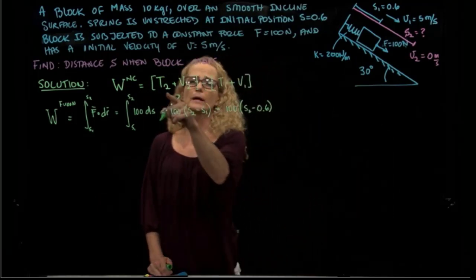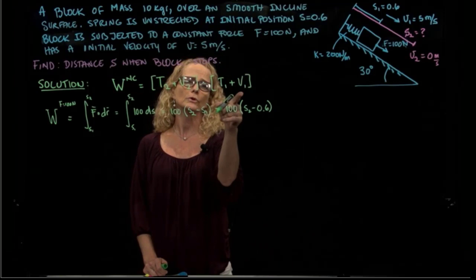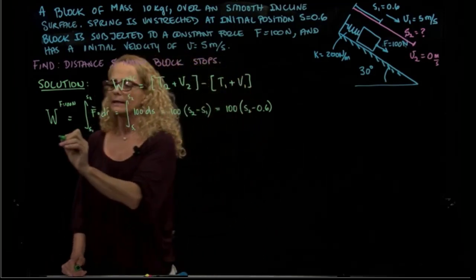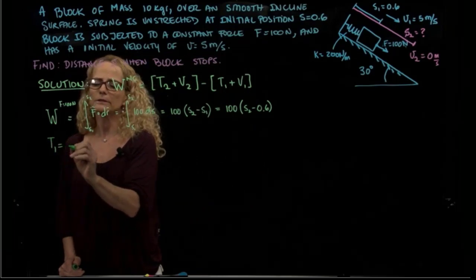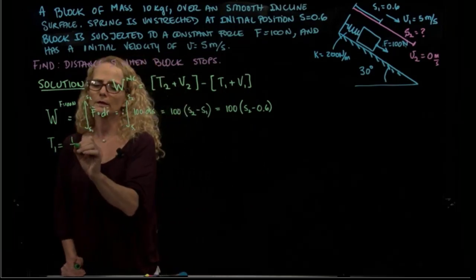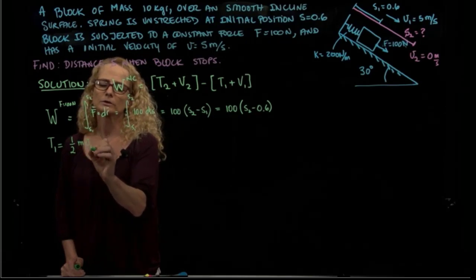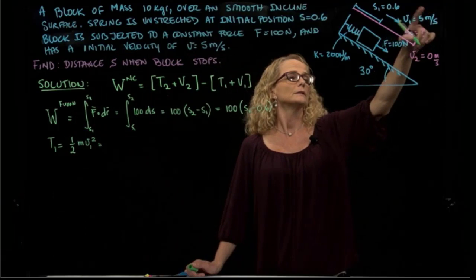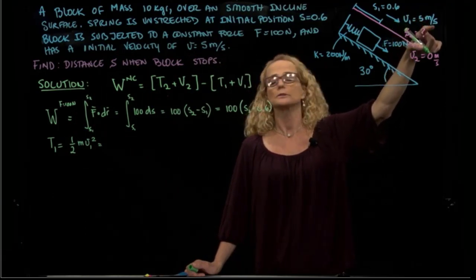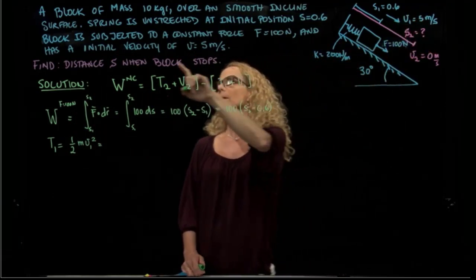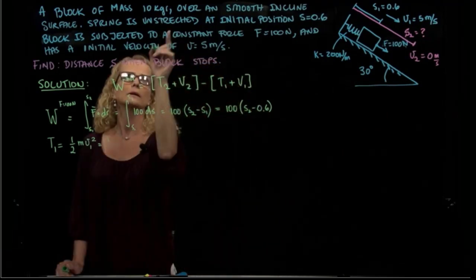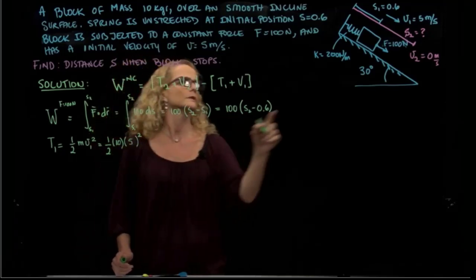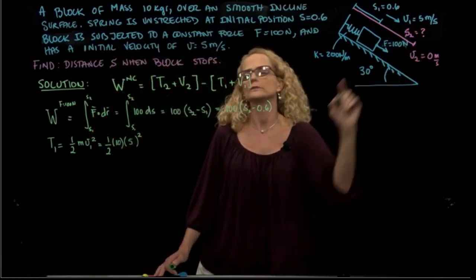Now let's calculate each one of these terms. Let's start for position number one, kinetic energy. The definition of kinetic energy is one-half mass times velocity squared. We are told that the velocity in position one is 5 meters per second, and the mass is 10 kilograms. So it's one-half times 10 times 5 squared.